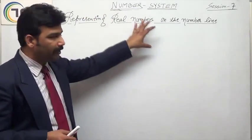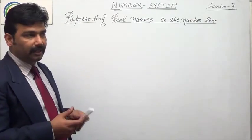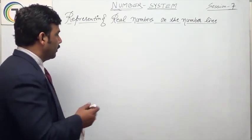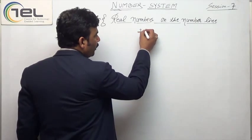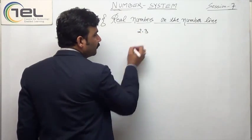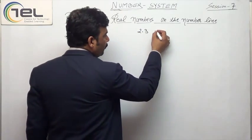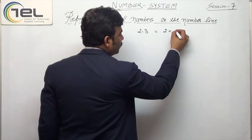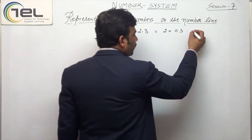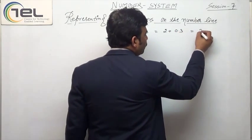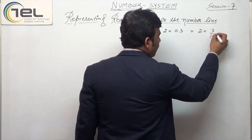In real numbers, they will be represented on the number line. If this is a number, let us say I have to represent 2.3. So 2.3 can be written as 2 plus 0.3, or it can be taken as 2 plus 3 by 10.